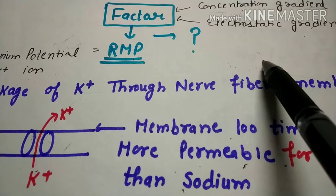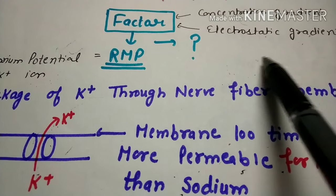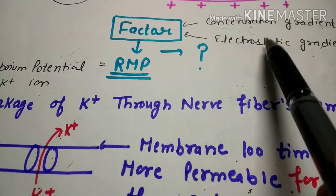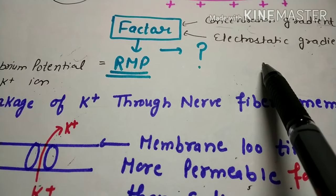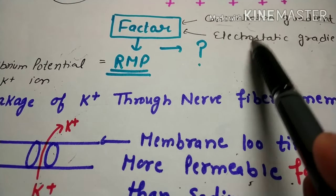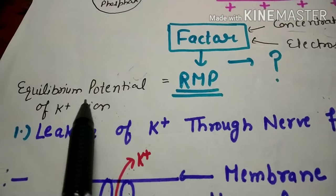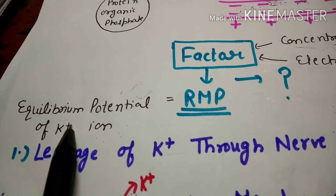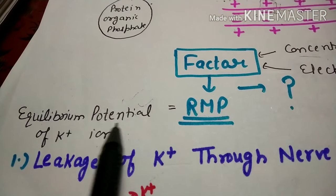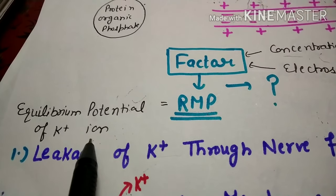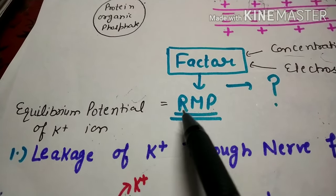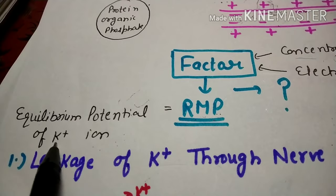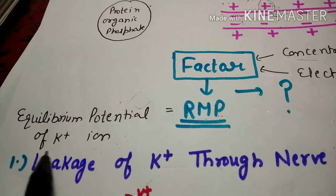So sodium has two forces acting on it: one is the concentration gradient, and the other is the electrostatic force. These two forces stop the net movement of sodium ions at a point called the equilibrium potential. So the equilibrium potential of sodium ion is established. However, sodium ion contributes less to the resting membrane potential because sodium ion channels are less numerous in the neuron membrane compared to potassium ion channels.